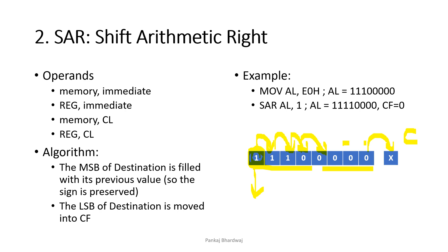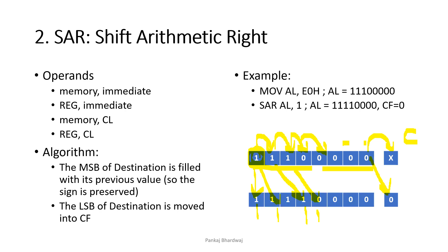For example, with AL = E0 (1,1,1,0,0,0,0,0), after SAR, every single bit is shifted right, the sign bit (1) is kept as 1, and the LSB 0 comes to the carry flag. So we have 1,1,1,1,0,0,0,0 — that is F0 as the answer.